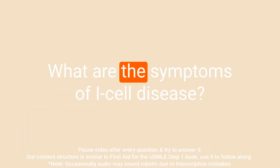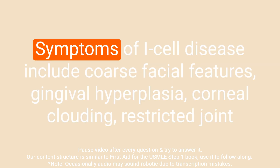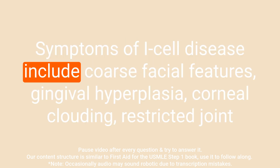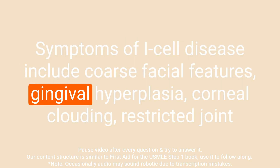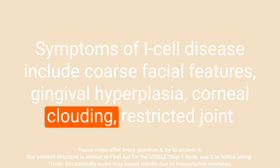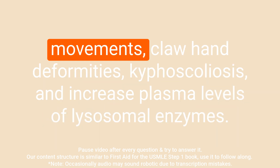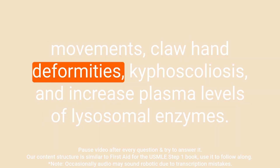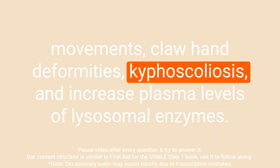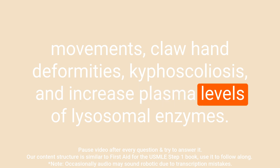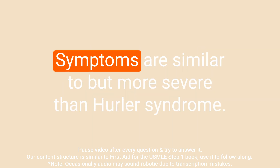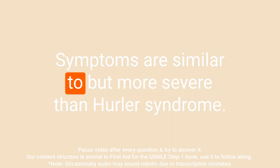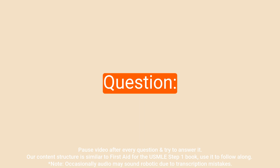Question: What are the symptoms of I cell disease? Answer: Symptoms of I cell disease include coarse facial features, gingival hyperplasia, corneal clouding, restricted joint movements, claw hand deformities, kyphoscoliosis, and increased plasma levels of lysosomal enzymes. Symptoms are similar to but more severe than Hurler syndrome.